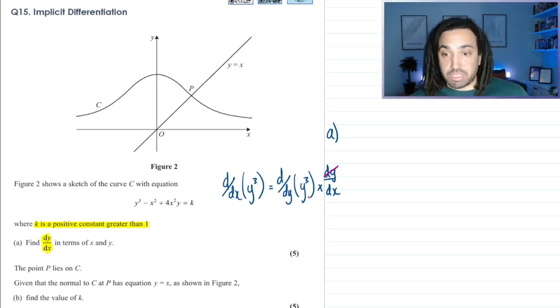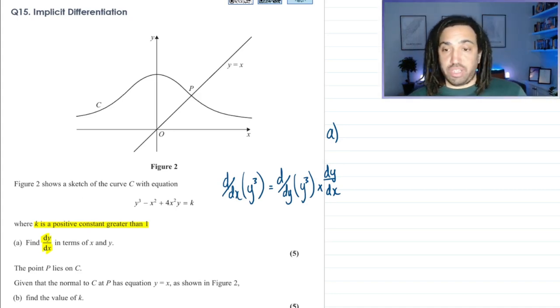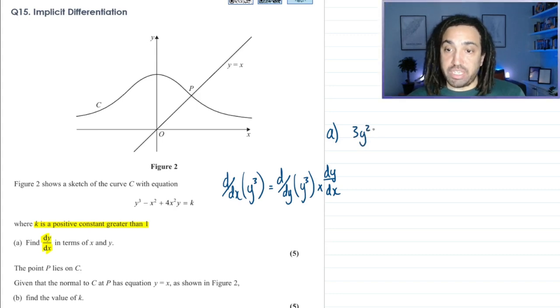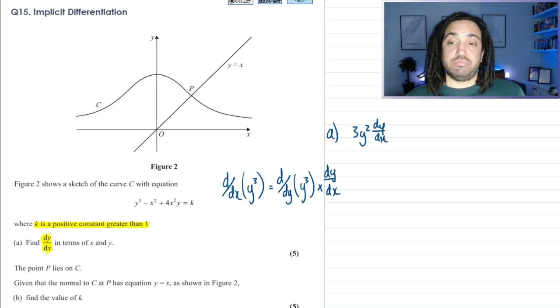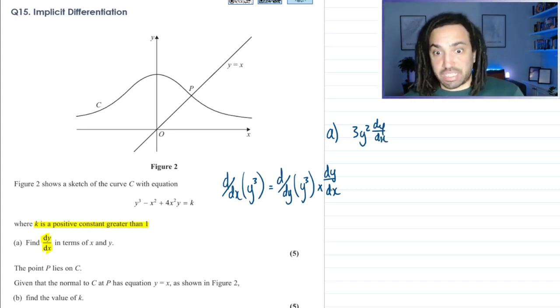So what does that mean for us? It means that if we are doing implicit differentiation, all we need to do is just differentiate a function of y and then multiply it by dy/dx. So in this instance, that means when we differentiate y cubed with respect to y, we just get 3y squared, but we have to multiply it by dy/dx as we are differentiating with respect to x, not y.